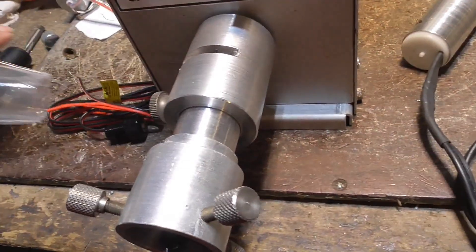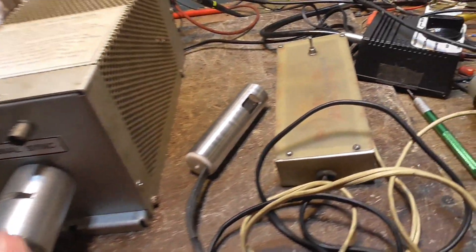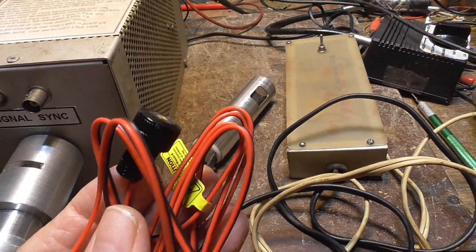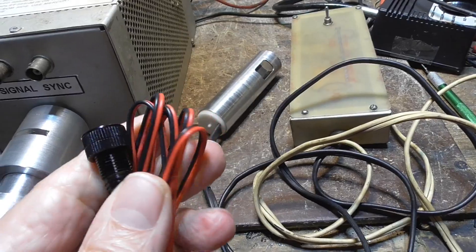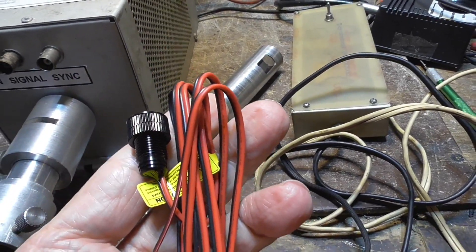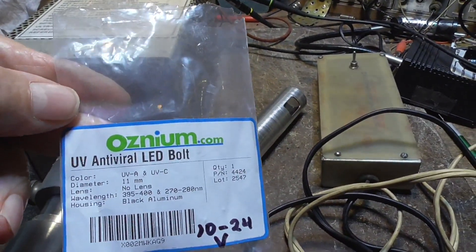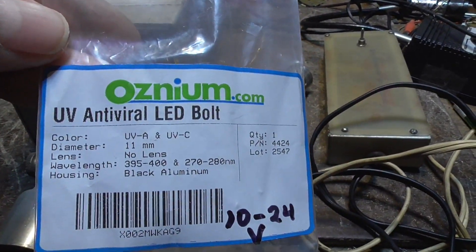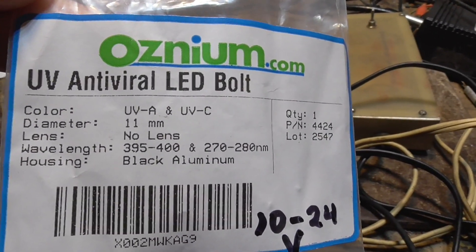This is the unit that comes from Amazon, Ultraviolet LED. You can find this on Amazon and get it. You can see there. I don't think they show this on the website.